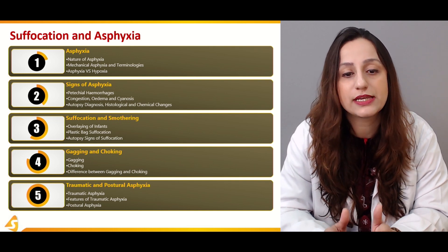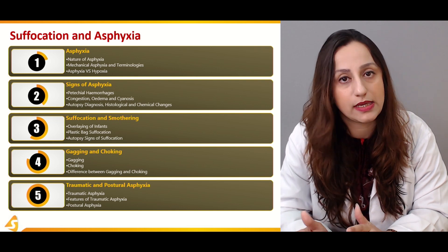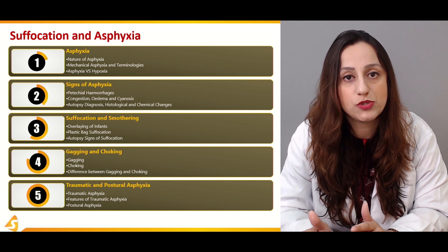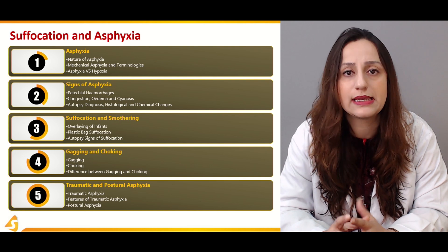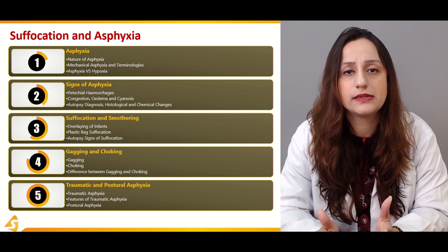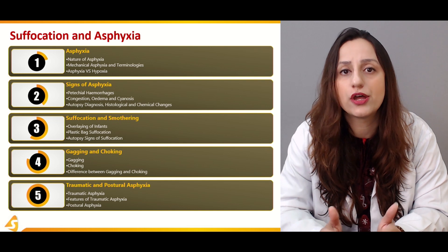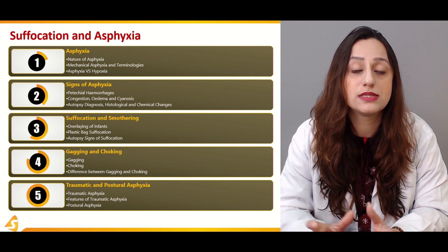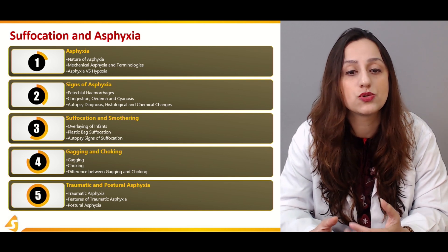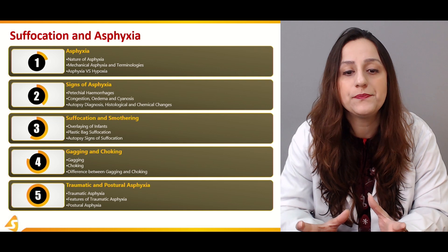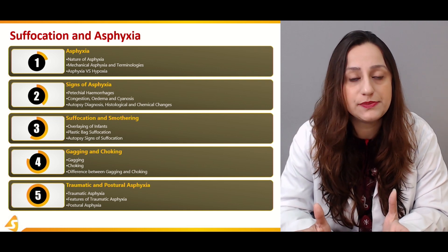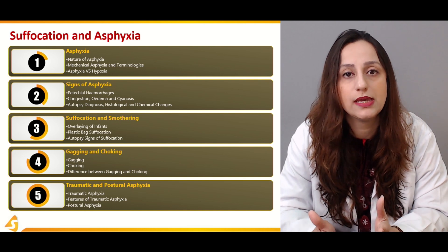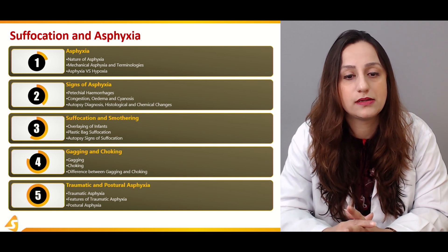In the fourth section we'll be dealing with gagging and choking, which are other modes of asphyxial deaths. Choking is also known as the café coronary syndrome because it is related to food/eatables. How to differentiate between gagging and choking is discussed in the fourth section.